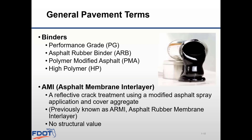Binders come in different forms. We have performance grade binders, which are quite common, such as PG-67-22 or PG-76-22. Asphalt rubber binders, or ARBs, are mixtures of binder and ground tire rubber. Polymer modified asphalt, PMA, is a binder chemically modified by adding different types of polymers. High polymer binder, HP, is a type of PMA with a much higher amount of polymer added. Each of these is considered a modified binder except for PG-67-22. Modified binders are generally used for higher performance or higher volume roads where we need extra resistance to rutting or cracking.